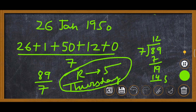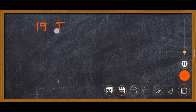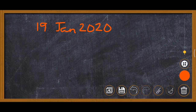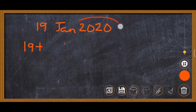Example 4 involves a leap year. The date is 19 January 2020. Since 2020 is a leap year and the date falls in January or February, the month code changes. In a leap year, January code becomes 0 and February code becomes 3. So: date = 19, January code = 0 (leap year), year = 20, leap years in 20 years = 20 ÷ 4 = 5. Century code for 2000 is 6.